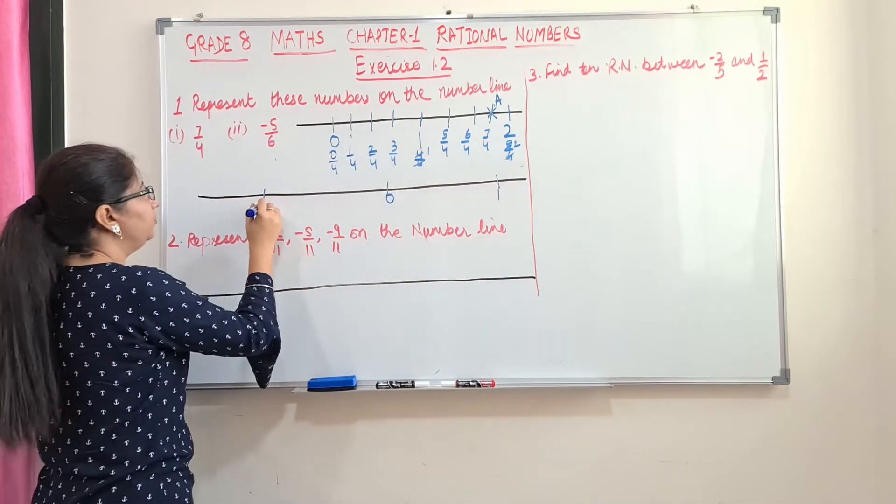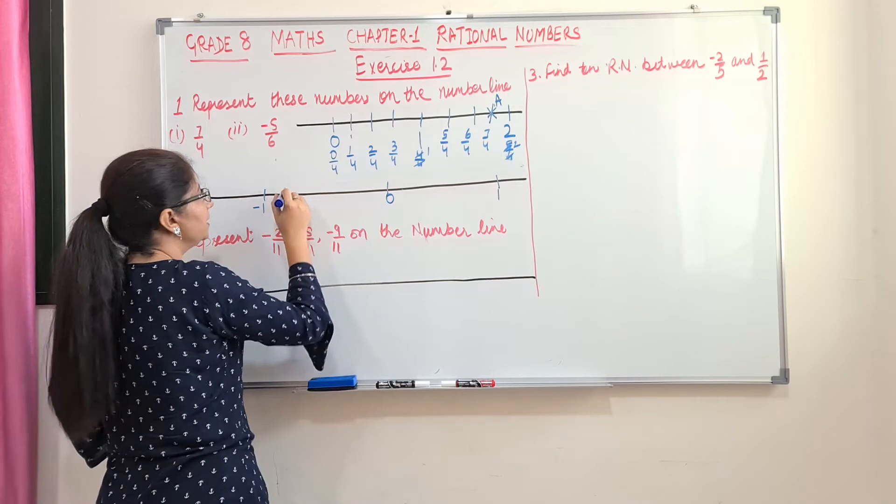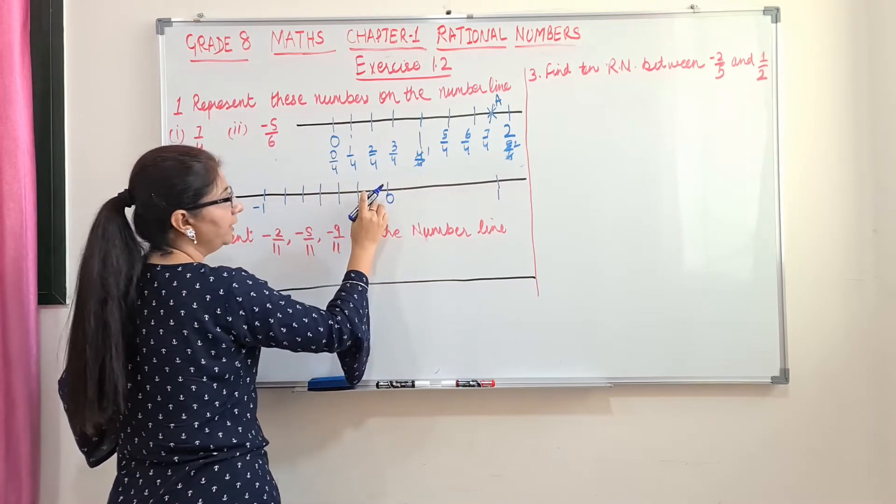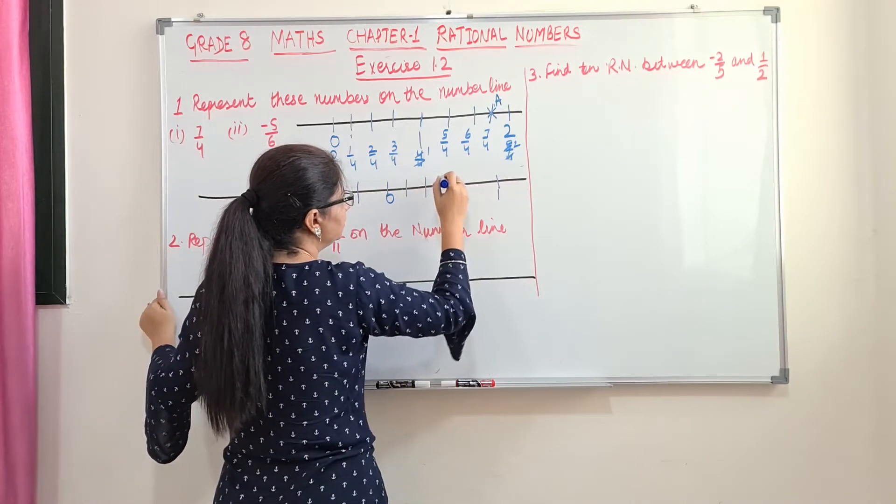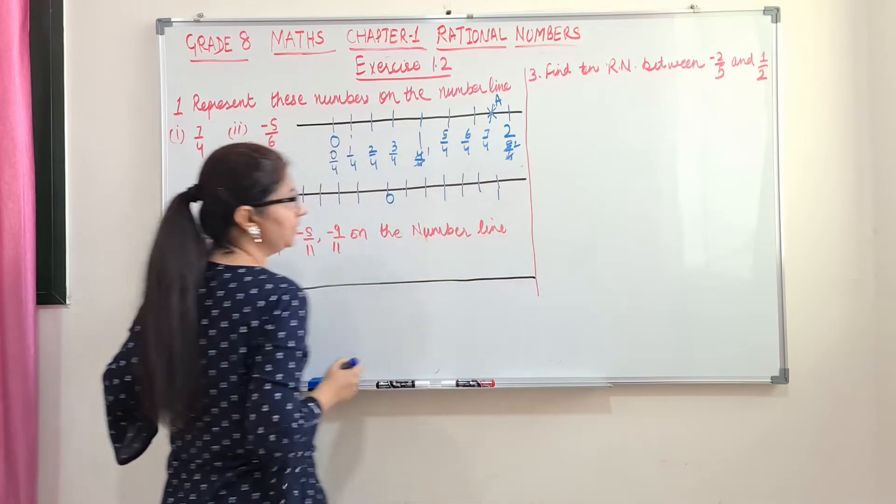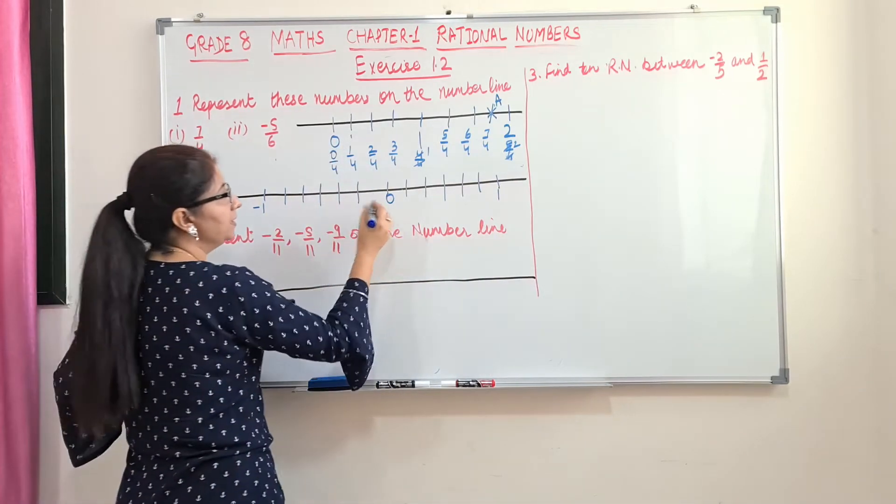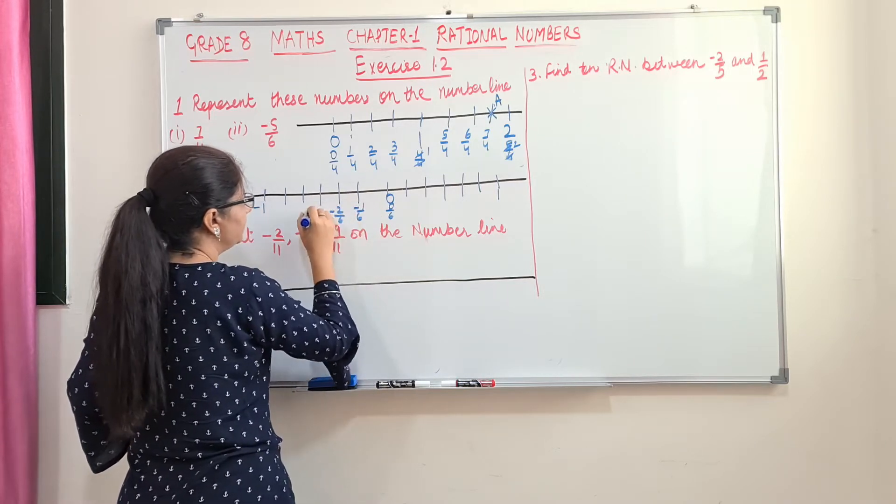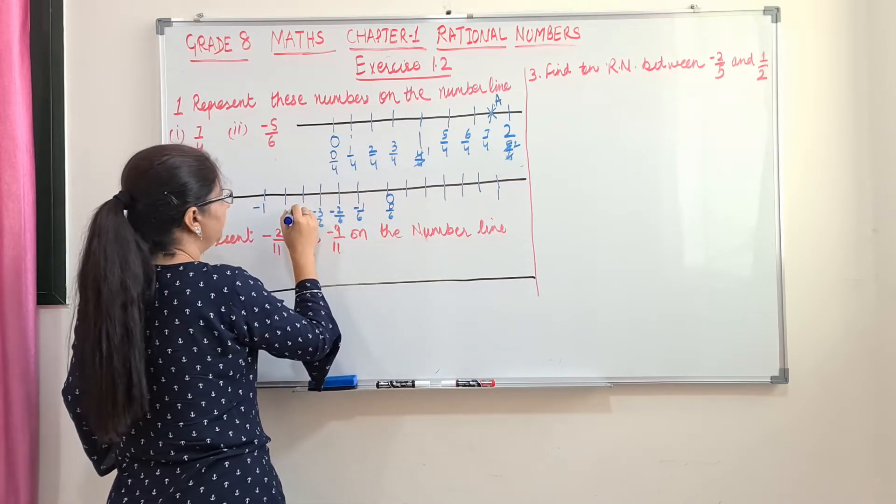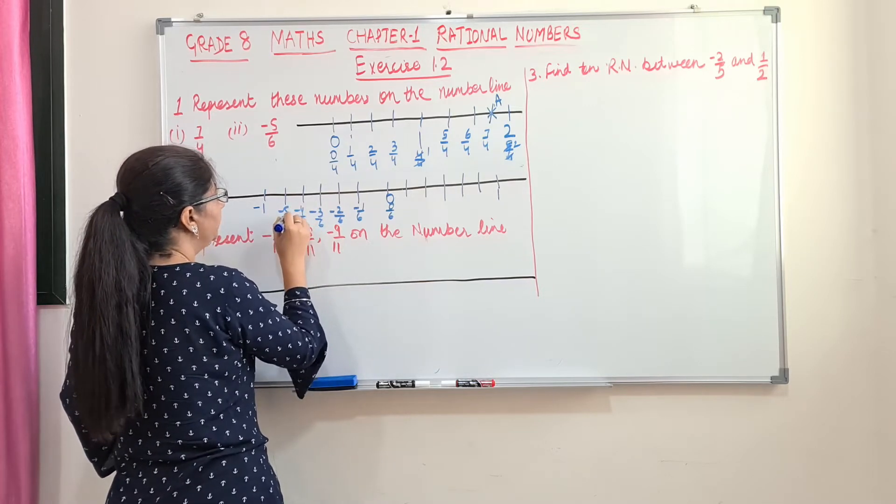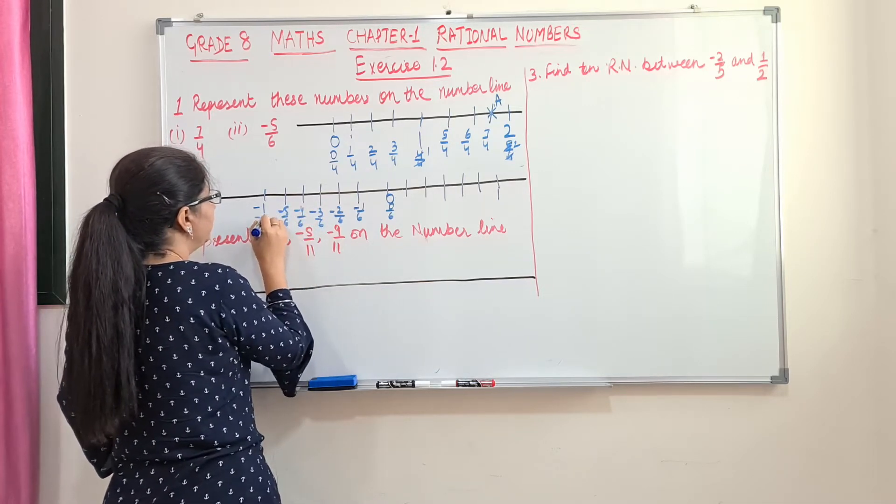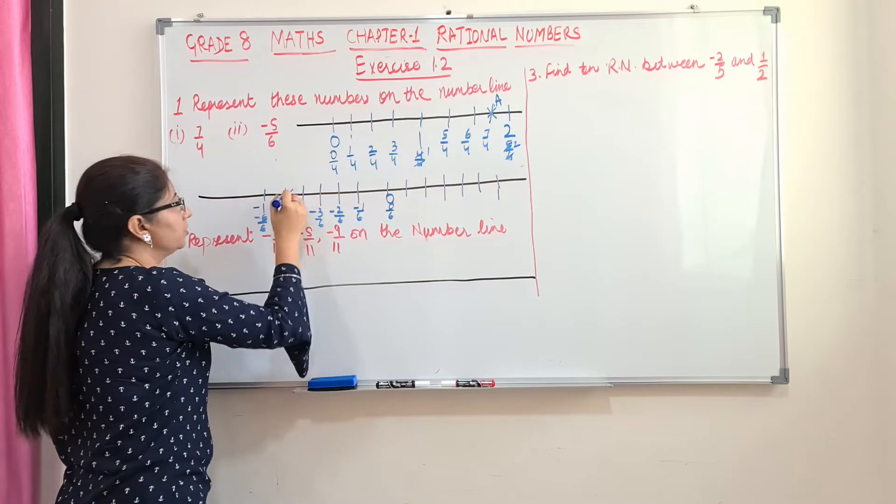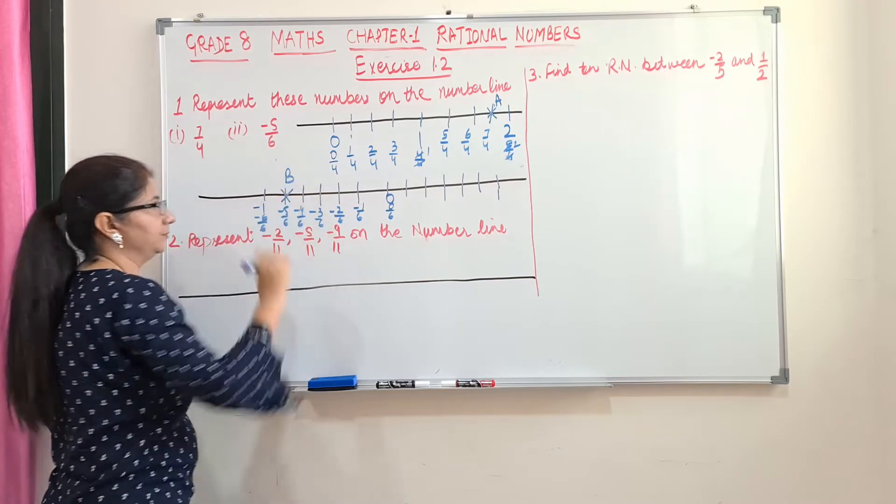On this side it will be minus 1. So divide it into 6 equal parts. 1, 2, 3, 4, 5 and 6. Here also same, 1, 2, 3, 4, 5 and 6. Write the numbers 0. This is 0 by 6, minus 1 by 6, minus 2 by 6, minus 3 by 6, minus 4 by 6, minus 5 by 6 and minus 6 by 6. So what is our number? Minus 5 by 6. So this is our target. Is it clear?